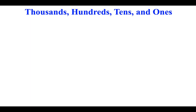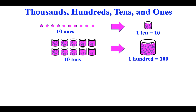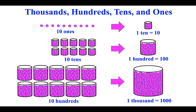Thousands, hundreds, tens, and ones. Ten ones is one ten. Ten tens is one hundred. Ten hundreds is one thousand.